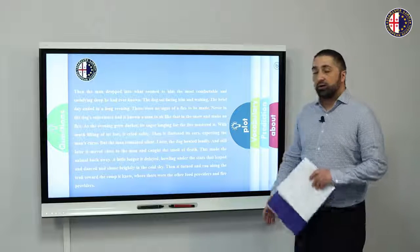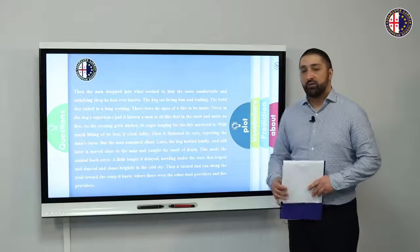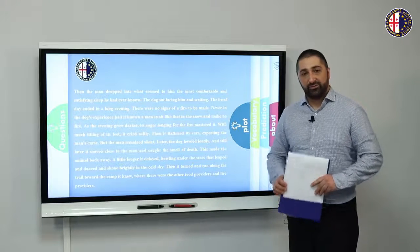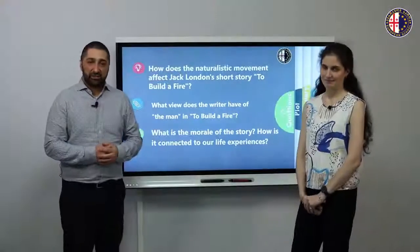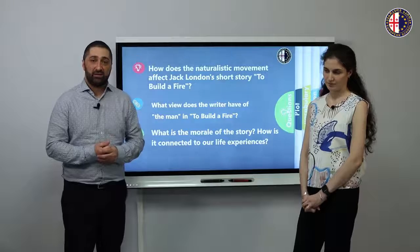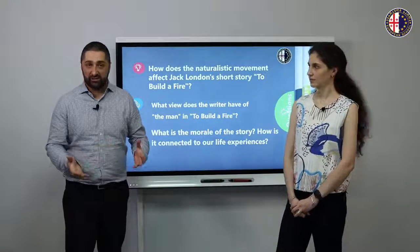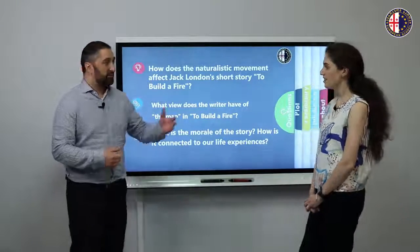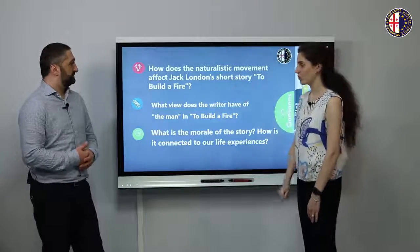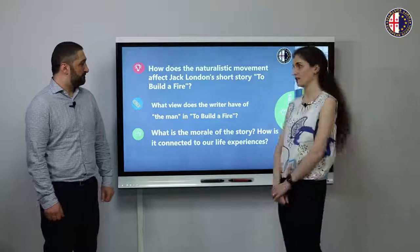I hope that you have found the story very interesting. The next part will be a final discussion about the story. Now it's time for discussion to talk about the story's main ideas, some elements and the author's intentions, and also some messages. The first question is: How does the naturalistic movement affect Jack London's short story 'To Build a Fire'?